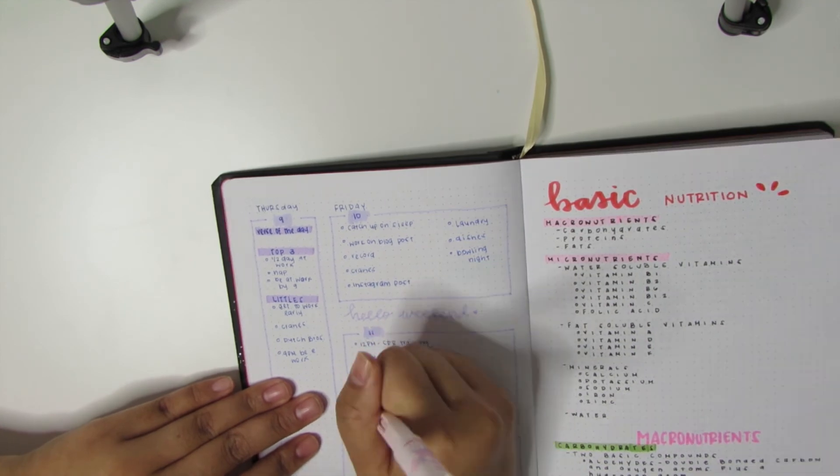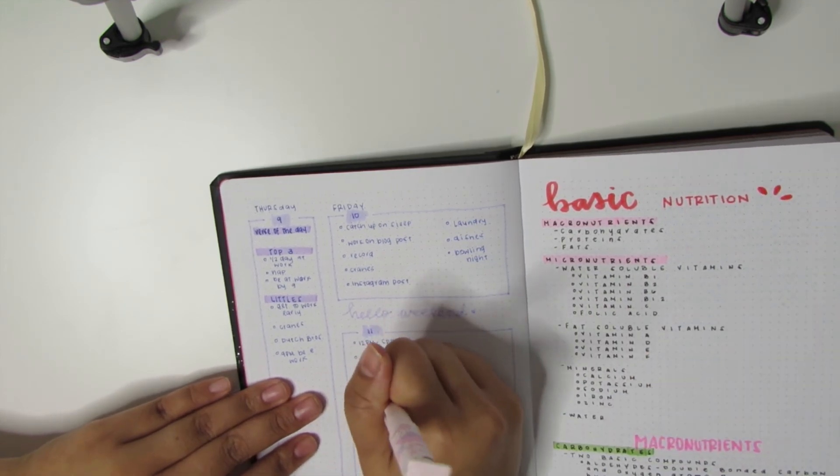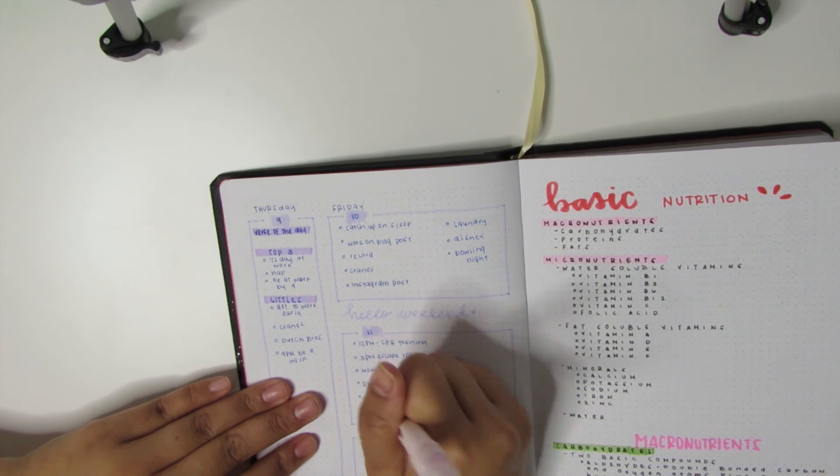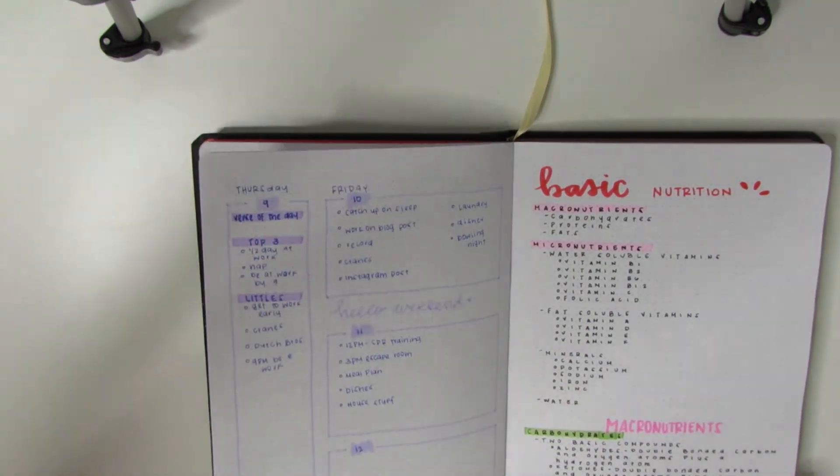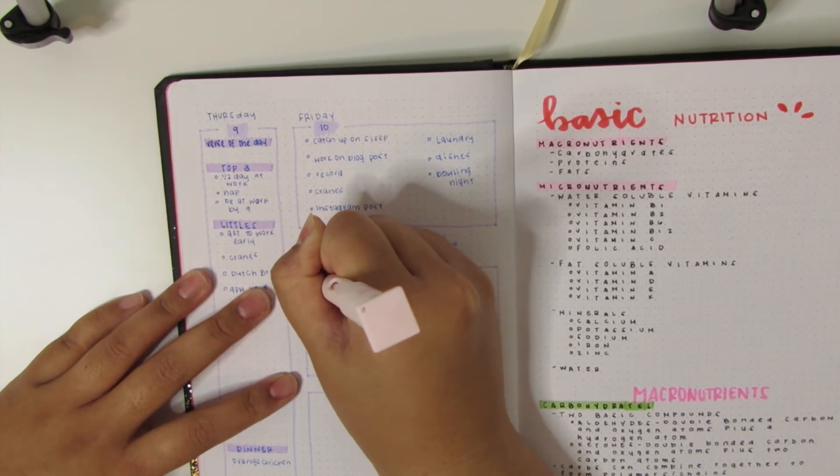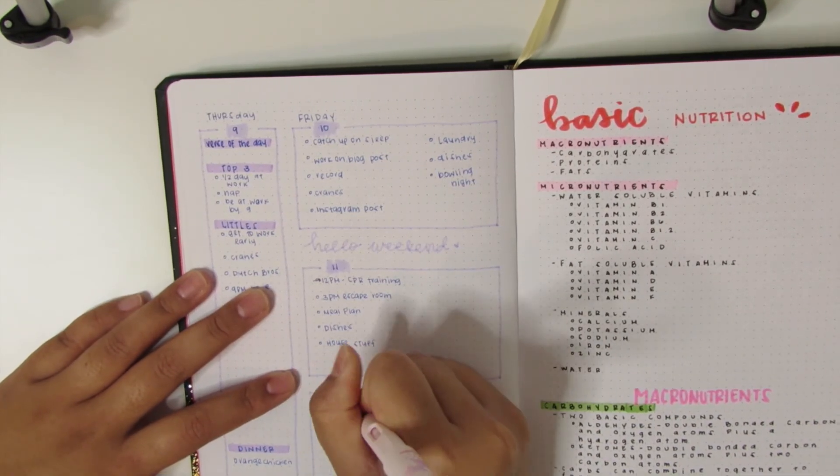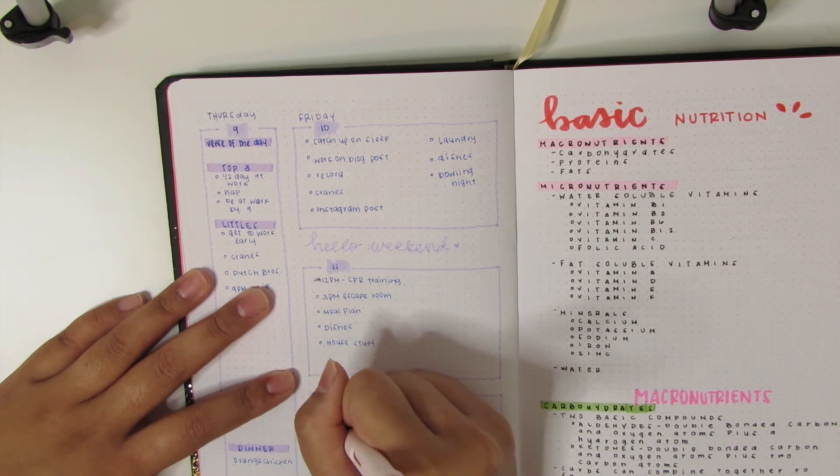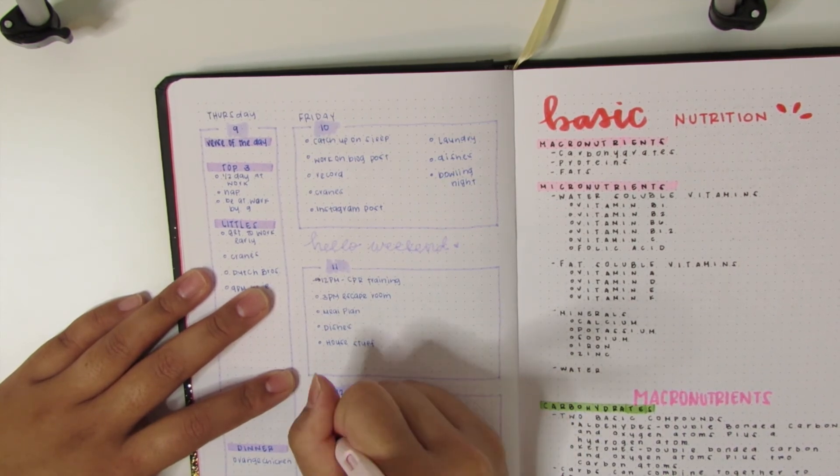Anyhow, I hope you guys enjoyed this quick bullet journal plan with me. I'm planning to switch it up and show you guys how I plan in all my different planners that way you guys have a better idea of how all of my planners work together. But this is like the first installment of it, I guess. I hope you guys are having a great week so far, and until my next video I will see you guys later. Thanks so much for watching, bye!